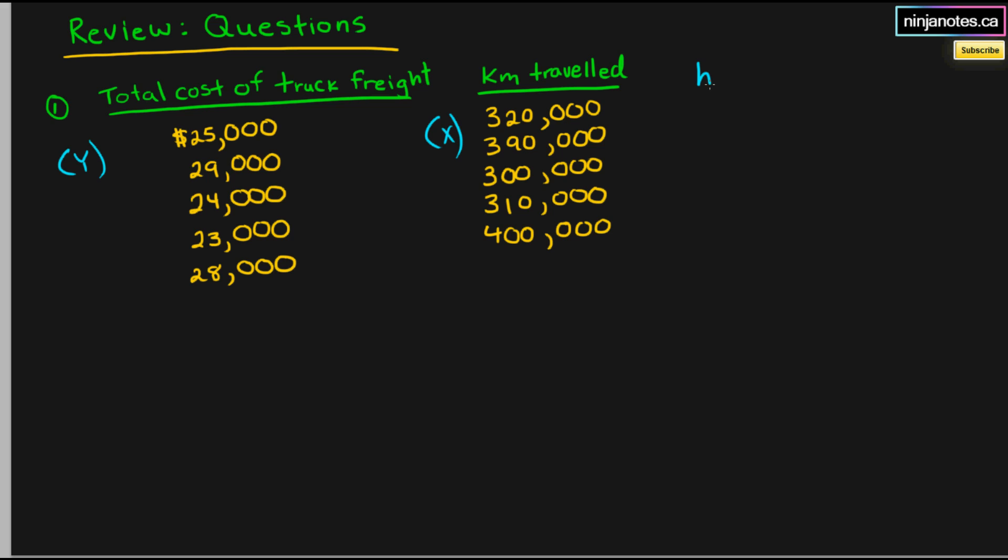Now since this is the calculation of the cost function using the high-low method, it's the high-low activity method. So always remember that. And by activity, that means you have to look at the activity over here, not the different costs when picking out your high and low points.